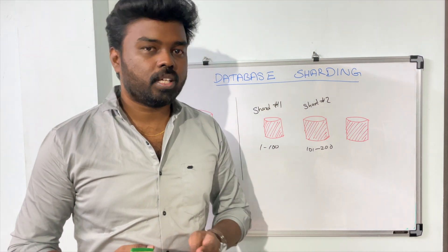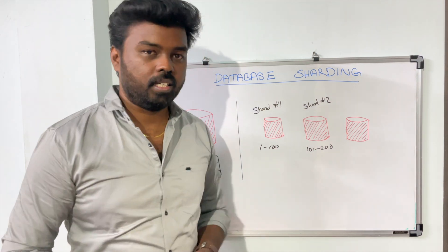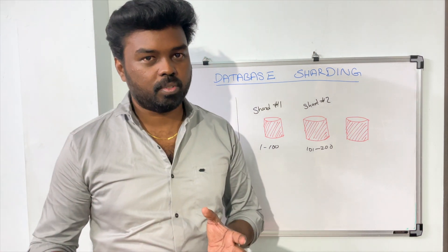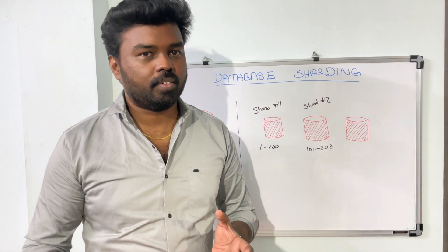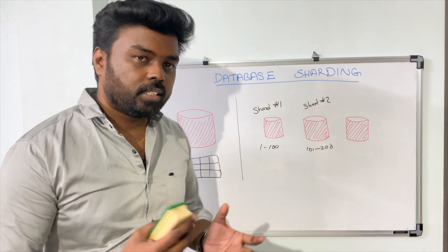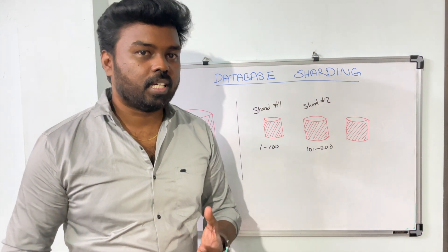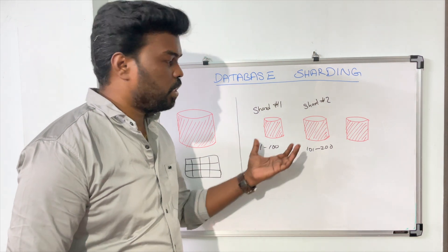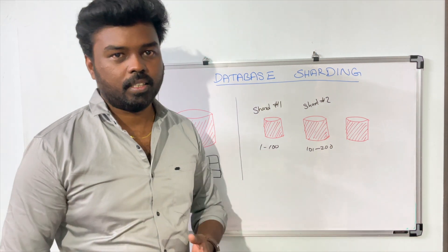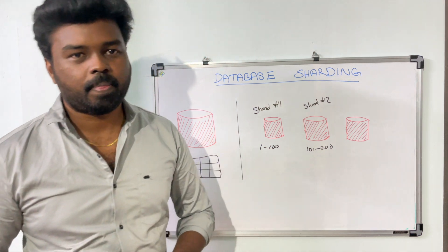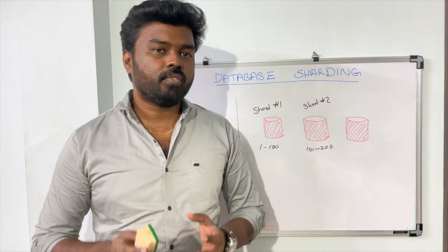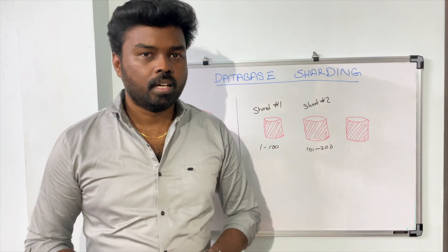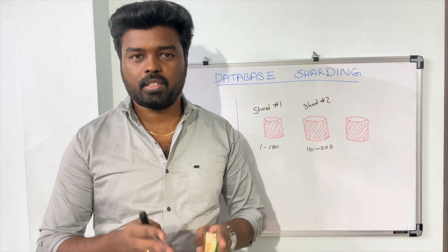Sometimes you can also do replication along with partitioning. For example, if a particular database table depends on other tables for supporting data, those reference tables can be replicated in each shard so you don't have to query across different shards. That's how sharding actually works. Now, another very important thing to understand in sharding is on what basis you actually do the sharding.